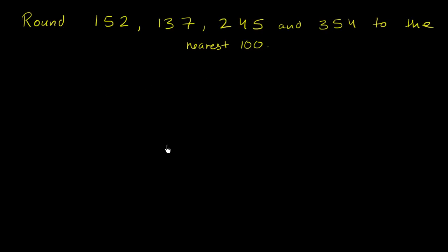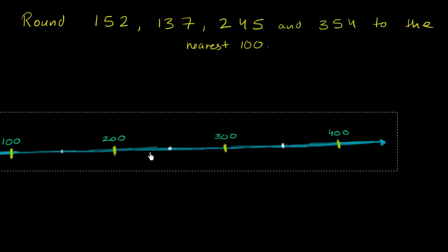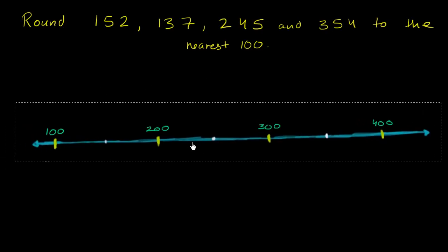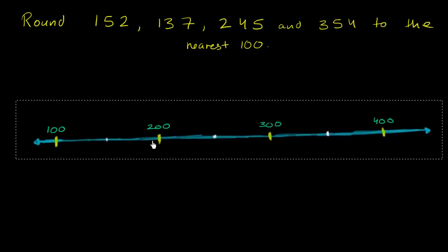So let's draw a number line here. And here I'm counting up by hundreds. What I've marked here — 100, 200, 300, 400 — these are all multiples of 100. I could keep going up: 500, 600, and so on and so forth.